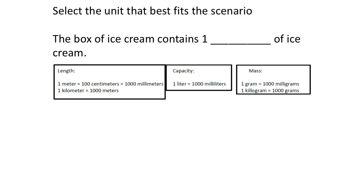Select the unit that best fits the scenario: a box of ice cream contains one blank of ice cream. In terms of capacity, we're looking at either liters or milliliters. Milliliters are pretty small, so I would say it contains one liter in this case.